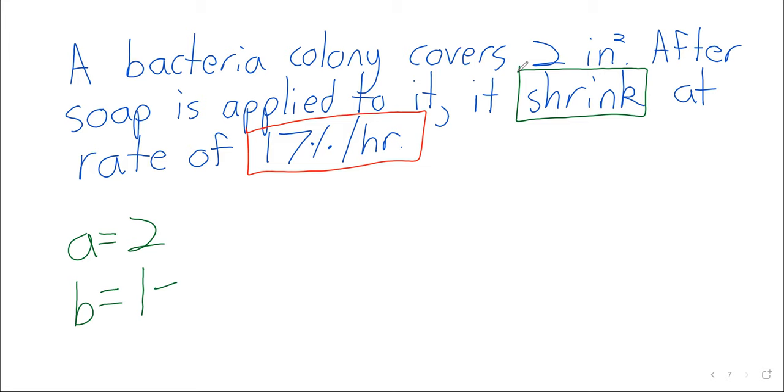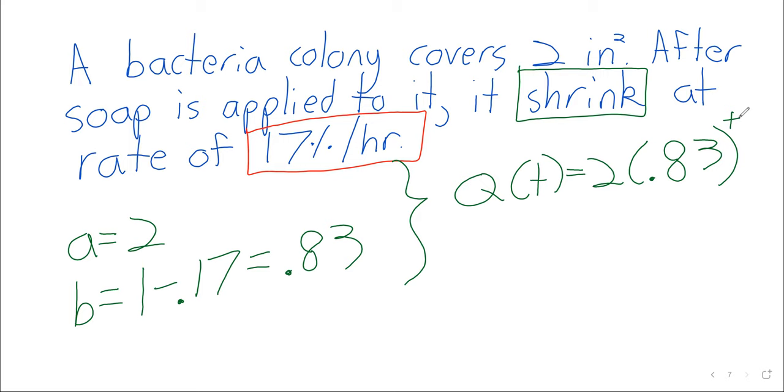0.17? Close. So the decimal is here, 17. When you move the decimal place twice to the left, you just get 0.17. 0.83. And then once you have a and b, you have all the information you need to write down this function q of t.